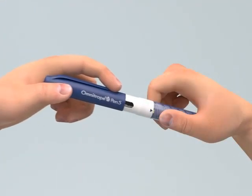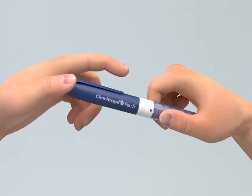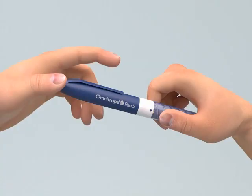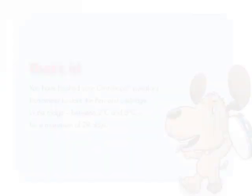Recap the pen. Your Omnitrope pen can now be stored in its pouch to protect it from light. Because the pen now contains an Omnitrope cartridge, it needs to be stored in a refrigerator between 2 and 8 degrees Celsius.